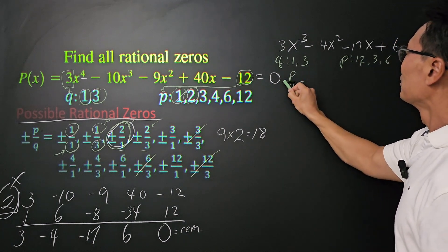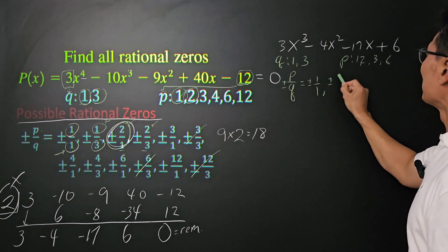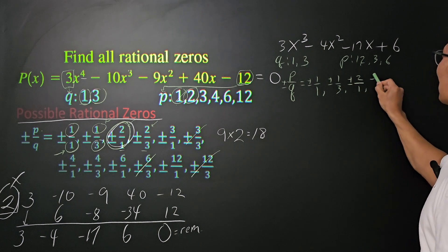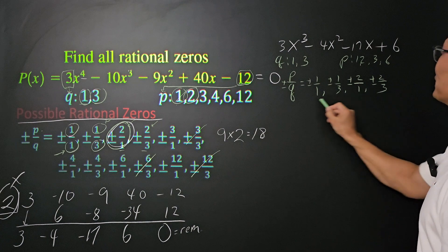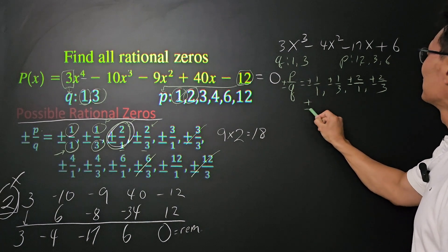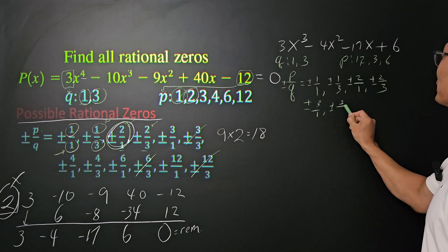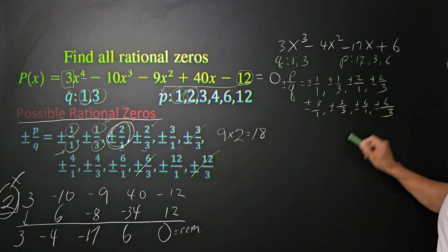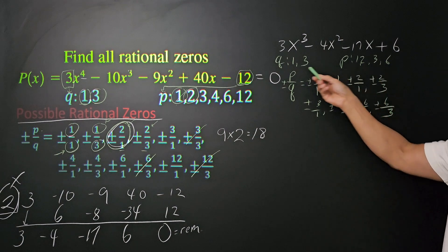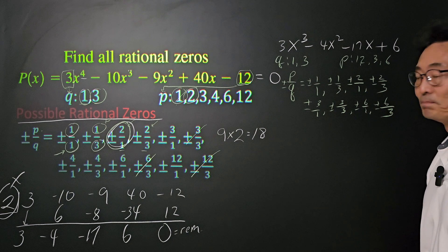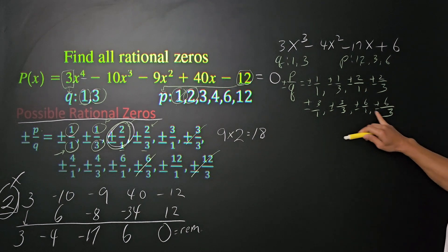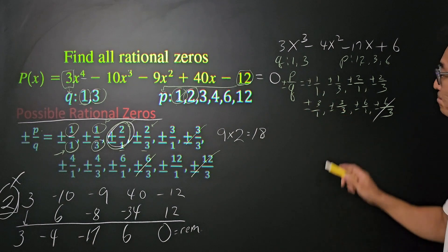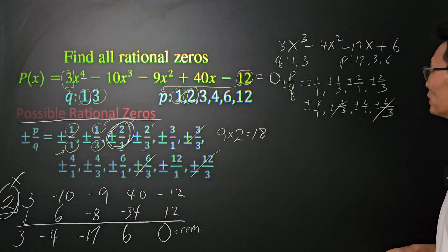Again, p over q will be plus minus 1 over 1, plus minus 1 over 3, plus minus 2 over 1, plus minus 2 over 3, plus minus 3 over 1, plus minus 3 over 3, plus minus 6 over 1, and plus minus 6 over 3, with all the combinations from the q's and the p's that we have. Then, as we did before, 6 over 3 is the same as 2 over 1, we're going to eliminate that. 3 over 3 is the same as 1 over 1, we're going to eliminate that as well.